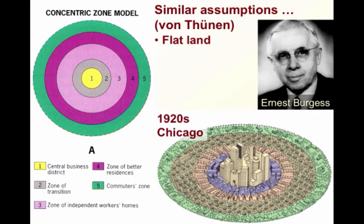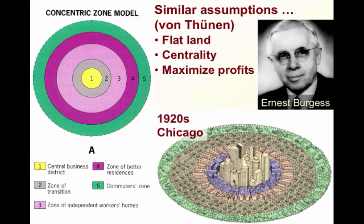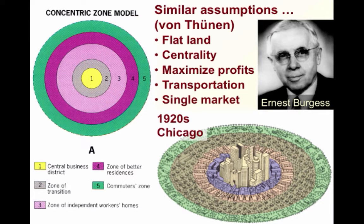For example, you have an isotropic flat plane, basically featureless and no barriers. You talk about the importance of centrality or the accessibility to the market — in this case, the CBD — and that's why you see it all concentrated in one place. Furthermore, individuals would seek to increase their profits or reduce their costs. As in von Thunen, transportation cost is also very important. It's proportional to the distance in all directions, which is why you see it as perfect circles. And of course, there is one single market: the CBD.